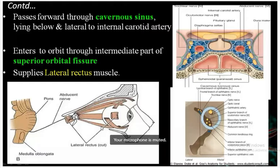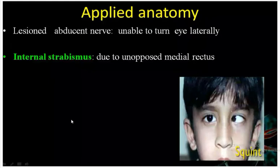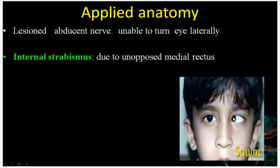The abducens nerve supplies the lateral rectus muscle. The action of the lateral rectus is to pull the eyeball laterally. When there is a lesion of the abducens nerve, the lateral rectus is paralyzed; the person will be unable to turn the eye laterally, and there will be internal squint due to the unopposed action of the medial rectus.